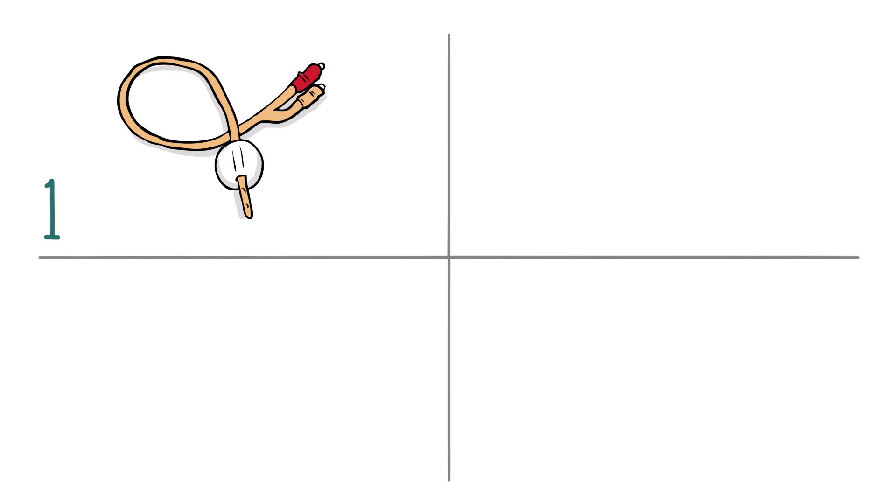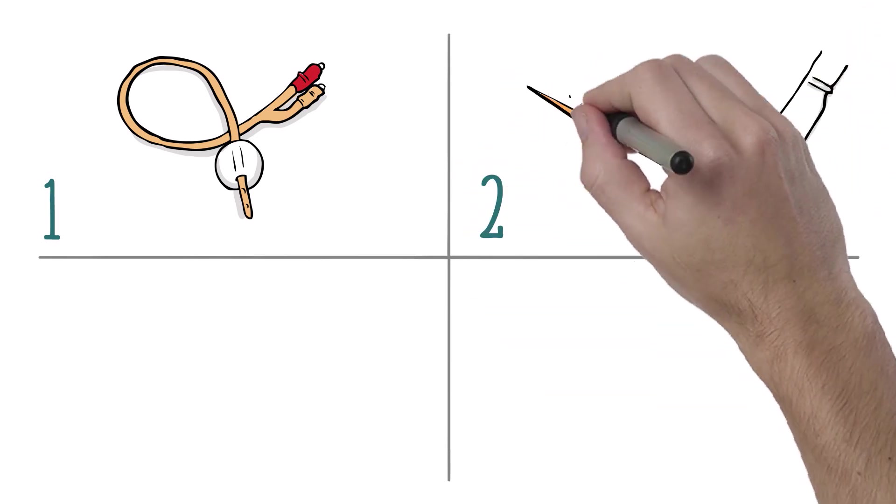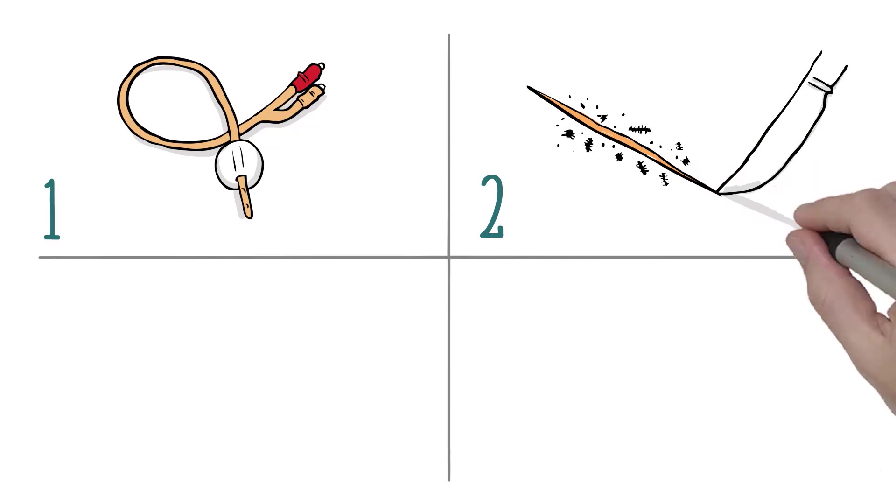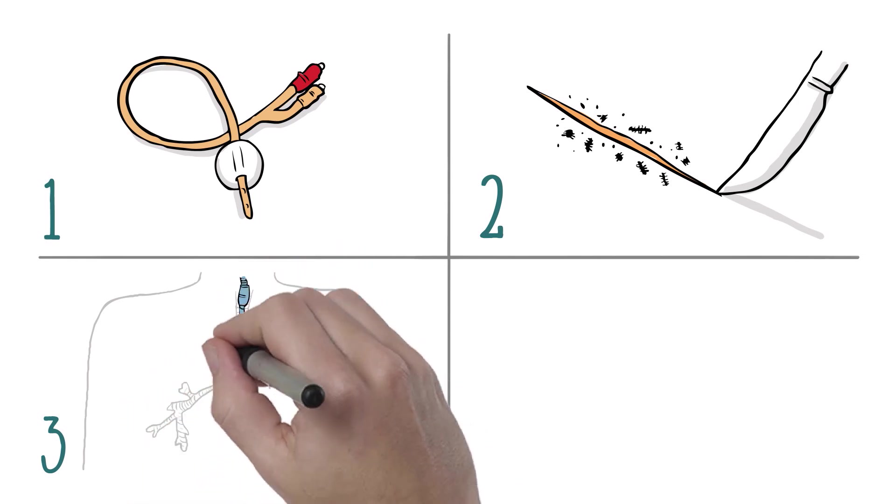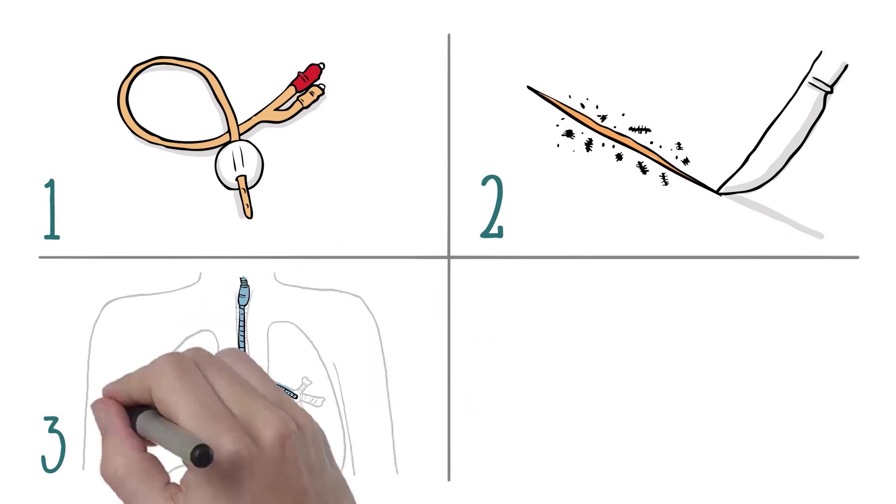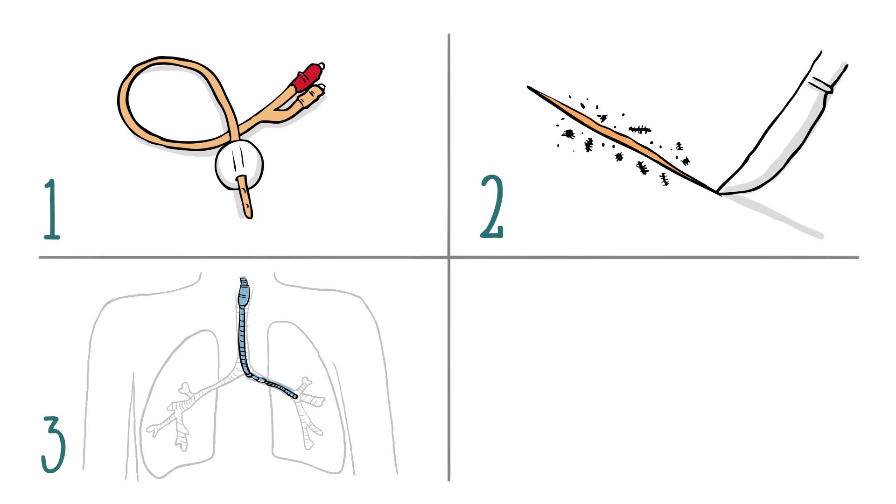Urinary tract infections contracted from catheters are the most common type of infection. Surgical site infections are the second most common and are generally caused by touch contamination. A lung infection known as ventilator-associated pneumonia with the use of a ventilator holds the highest mortality rate.